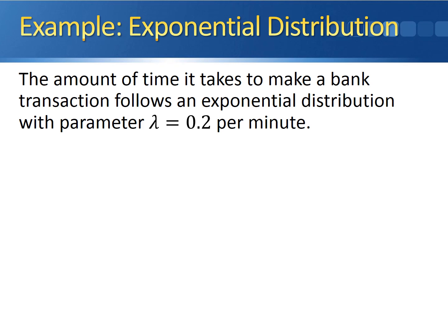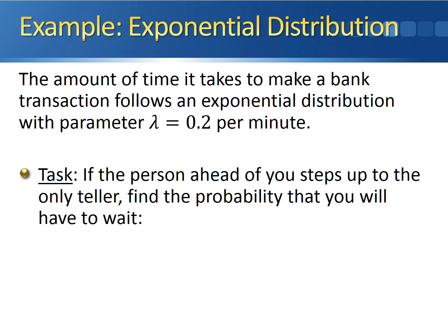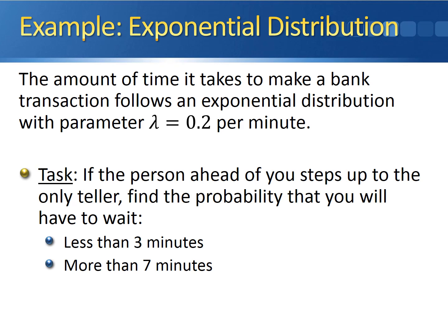Here is an example using all three equations. The amount of time to make a bank transaction follows an exponential distribution with parameter lambda equal to 0.2 per minute. If the person ahead of you steps up to the only teller, we want to find the probability that you wait less than three minutes, more than seven minutes, or between three and seven minutes.